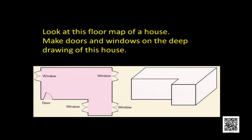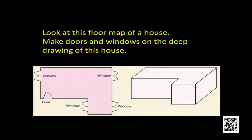Now, look at the floor map and make doors and windows on the deep drawing of the house. In the front side there is a door at one corner — you can draw the door there. Similarly, in the right part there are two windows — here is one window and another window. Here also you can draw a window, but you can't draw this window because you cannot see that portion of the house. So in a deep drawing, not every window can be shown.